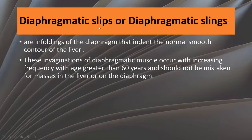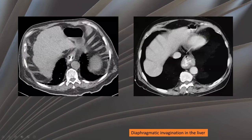Diaphragmatic slips or diaphragmatic slings represent enfolding of the diaphragm that indent the normal smooth contour of the liver. This invagination of the diaphragmatic muscles increases in frequency after the age of 60 years, and should not be mistaken for liver masses or diaphragmatic masses. Here are two patients with diaphragmatic invagination seen on axial cuts.